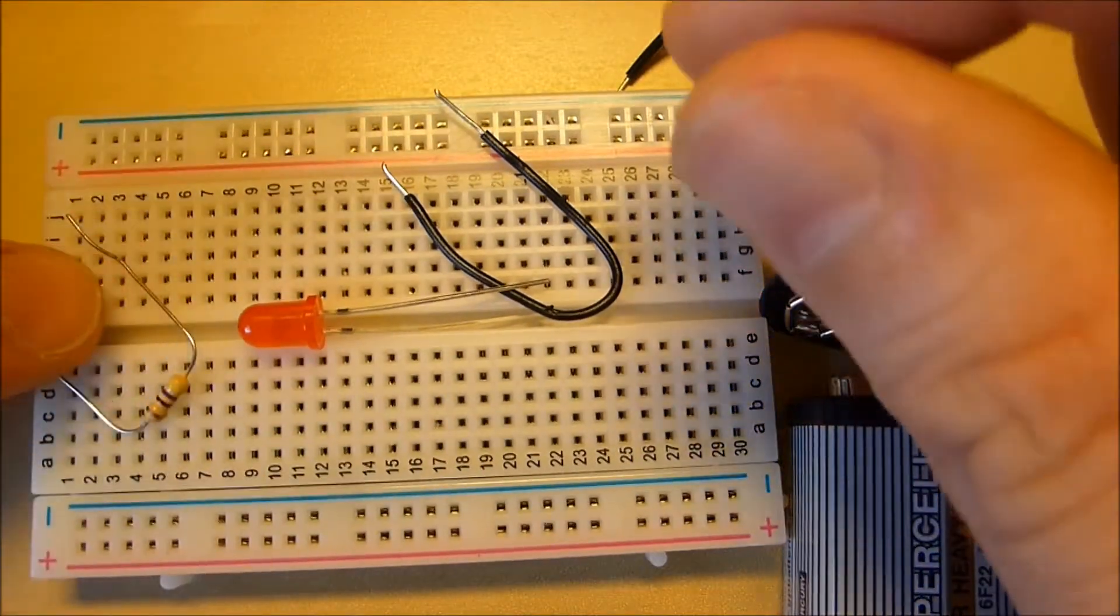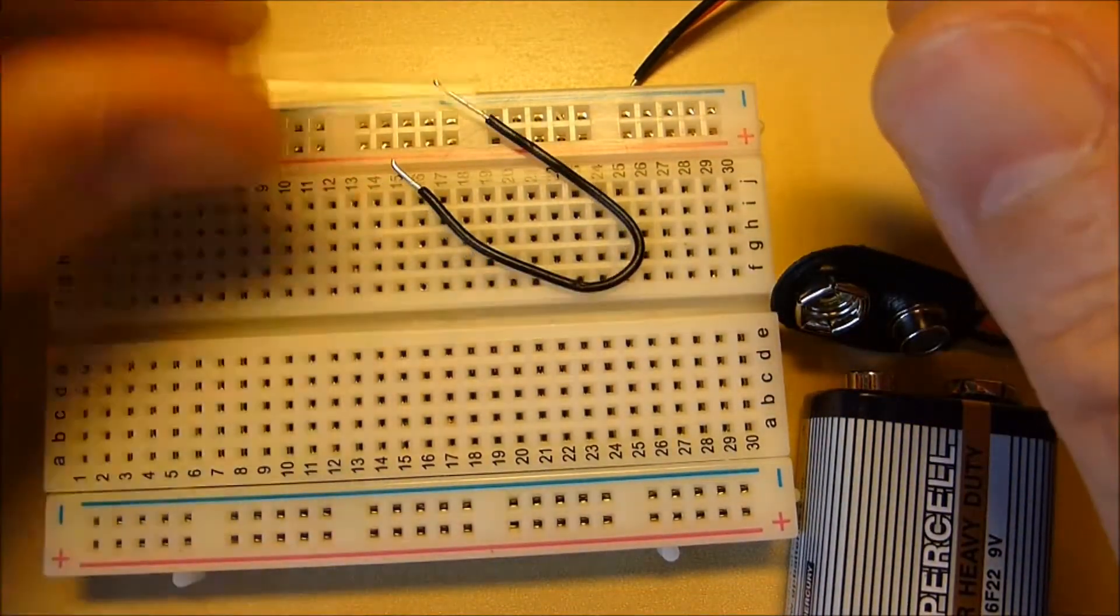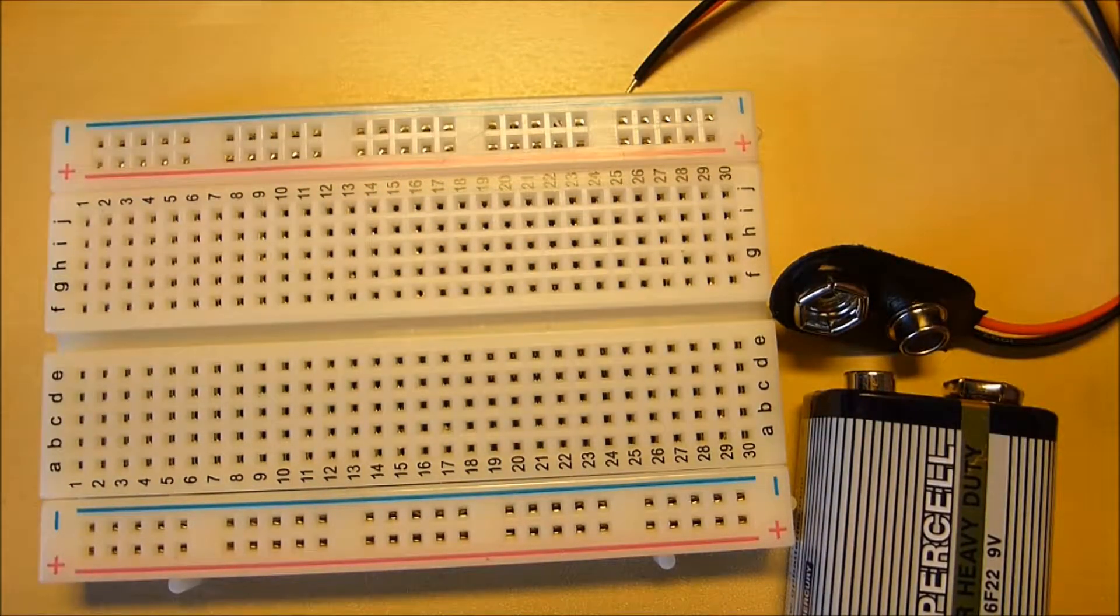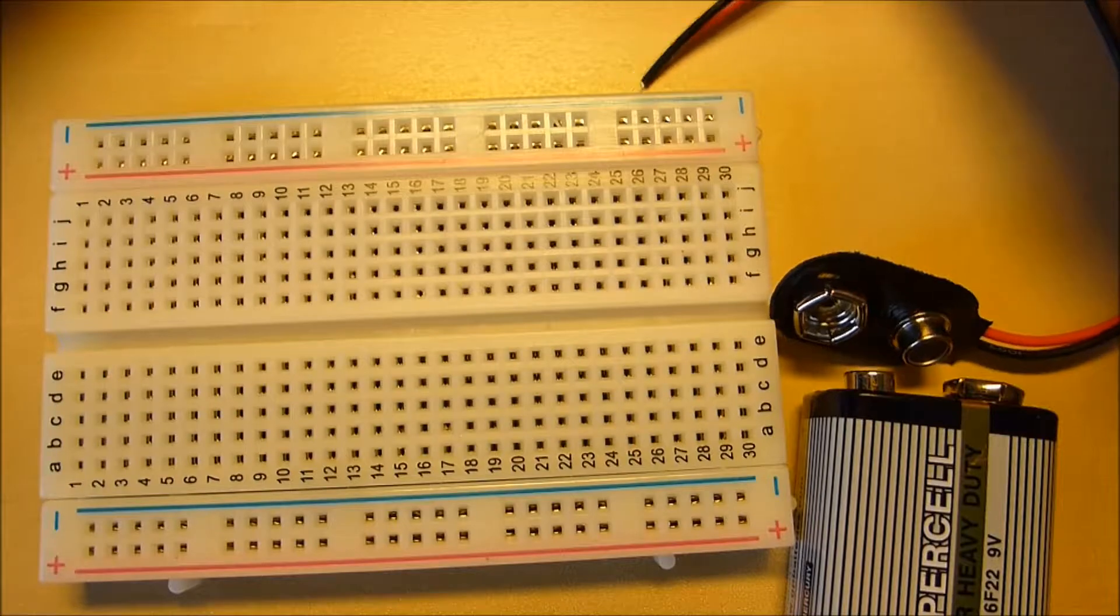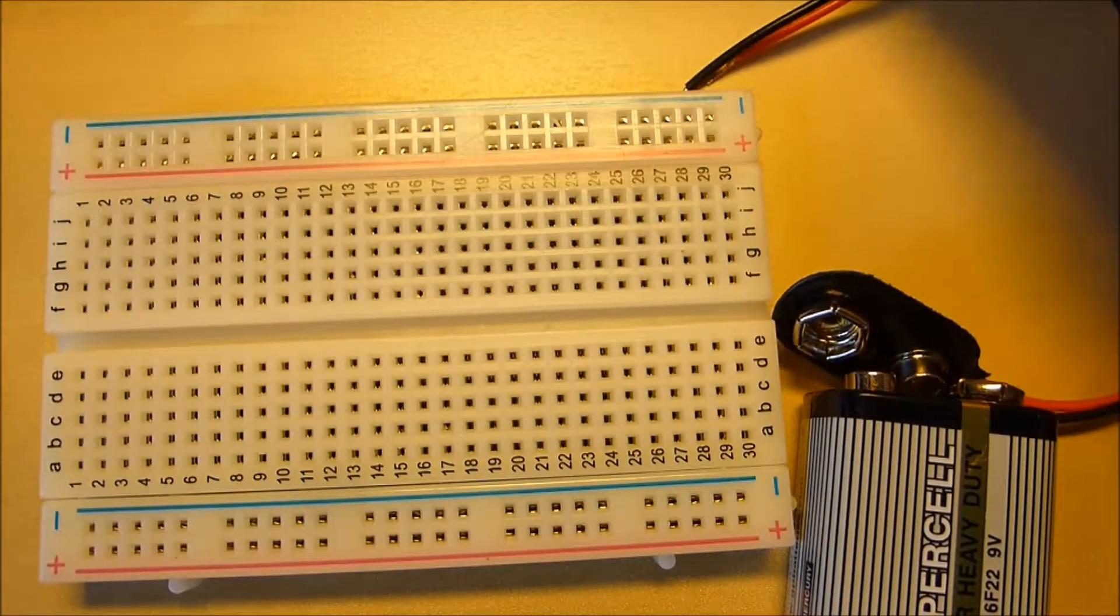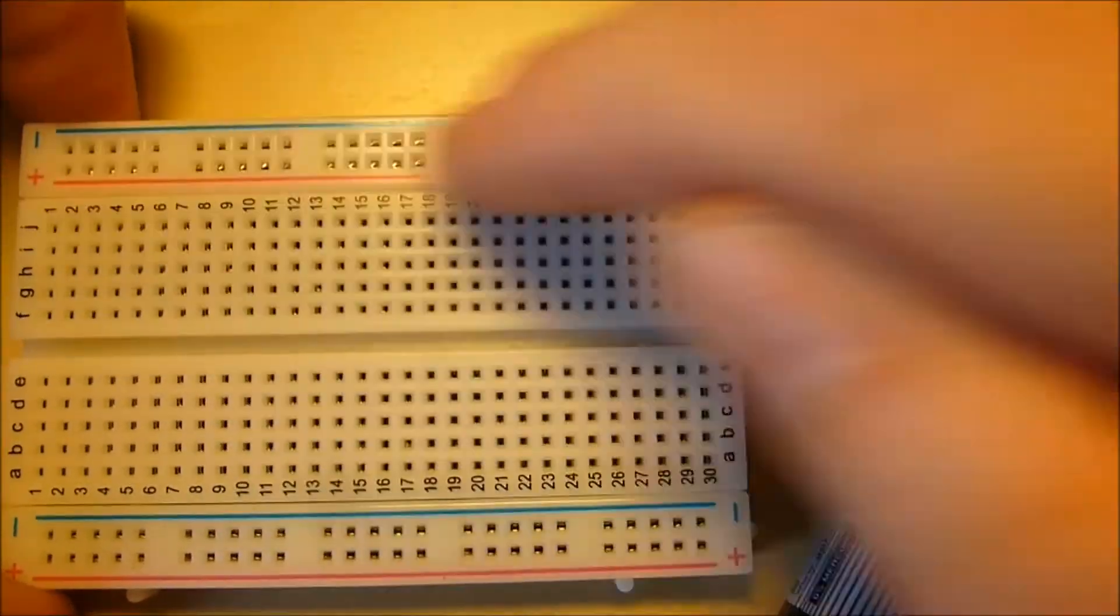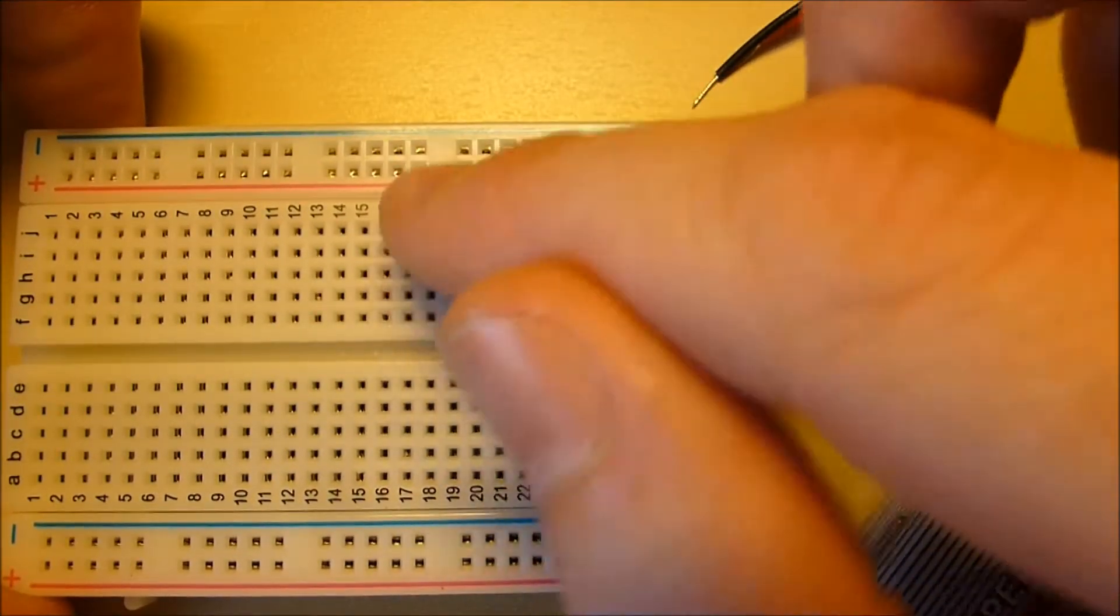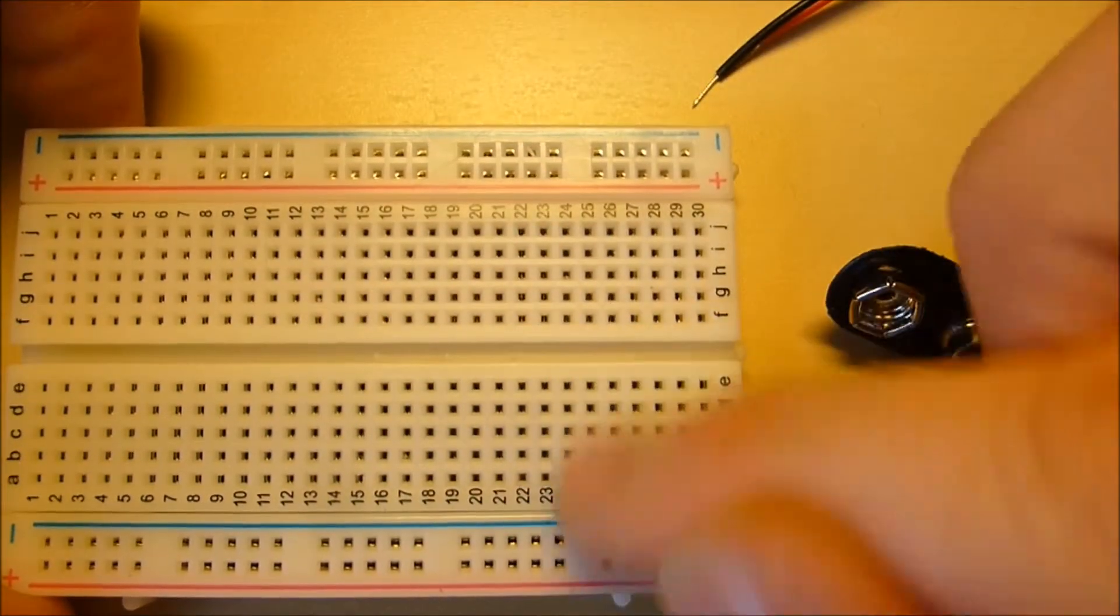So what we're going to do is we're going to use a breadboard and these breadboards are used to prototype or to make electronic circuits relatively quickly without having to use any solder or anything permanent. They're connected across here, each of these rails is connected, each of these negative rails is connected and they're also connected in these columns like that.